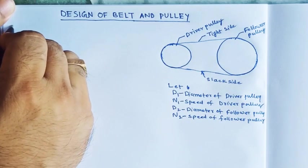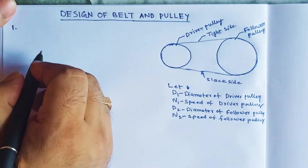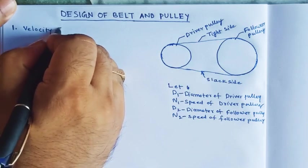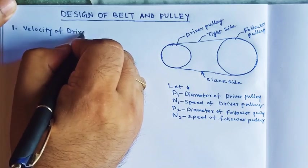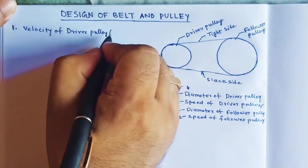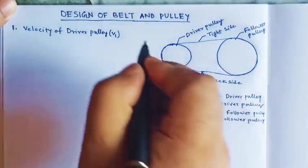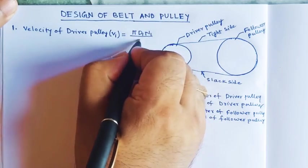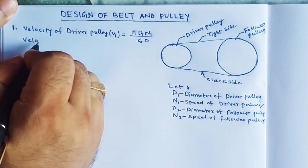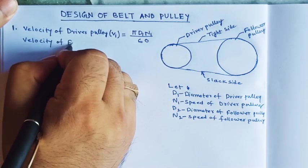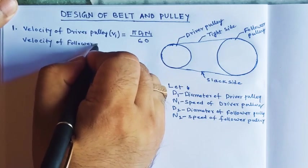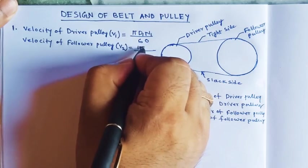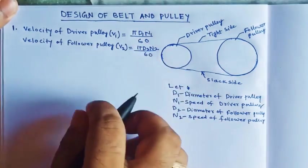Now first I have to find the velocity. The velocity of the driver pulley, which is denoted by v1, equals pi × d1 × n1 / 60. Similarly, the velocity of the follower pulley, v2, equals pi × d2 × n2 / 60.